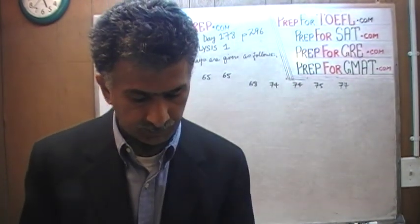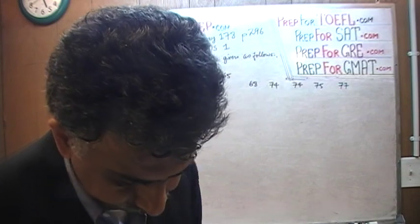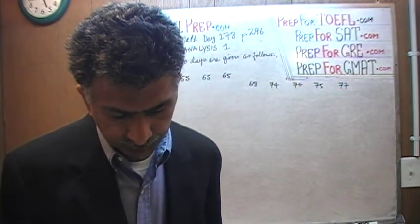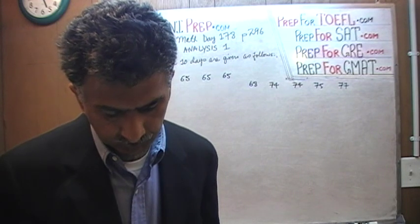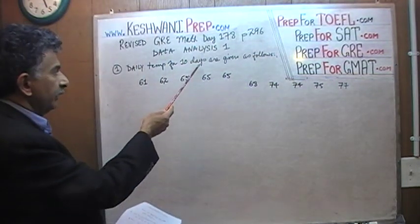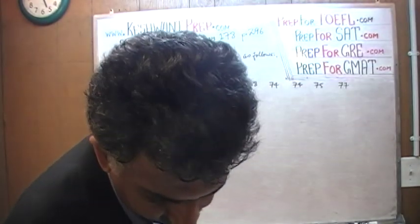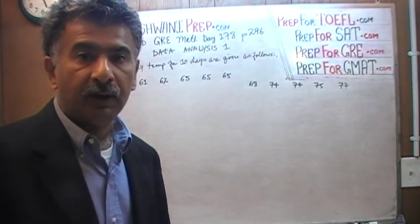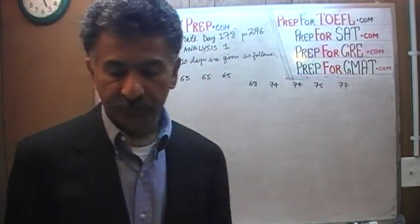Number one says: the daily temperatures in degrees Fahrenheit for 10 days were — and we're given the 10 temperatures right here. Our first job is to figure out the mean, the average.